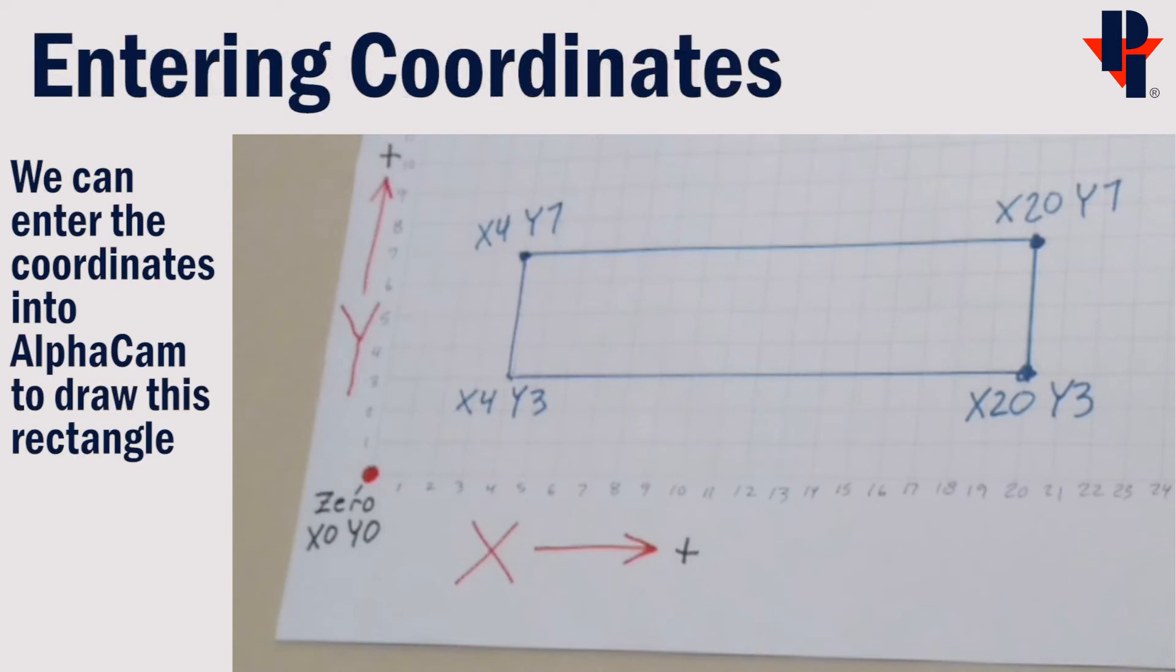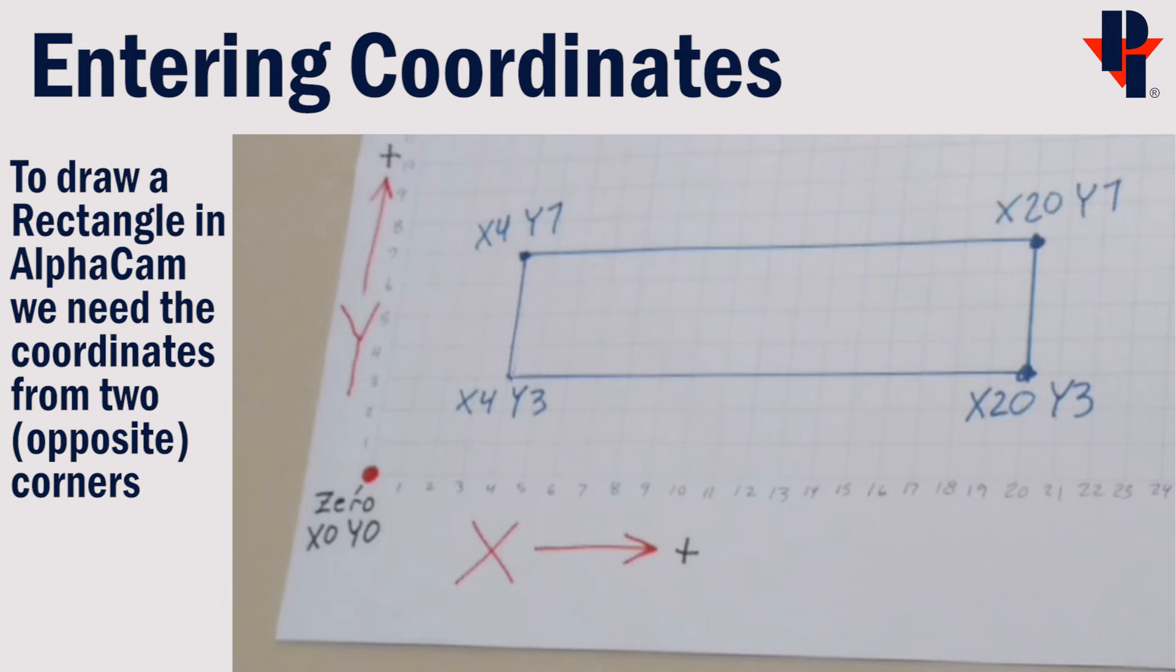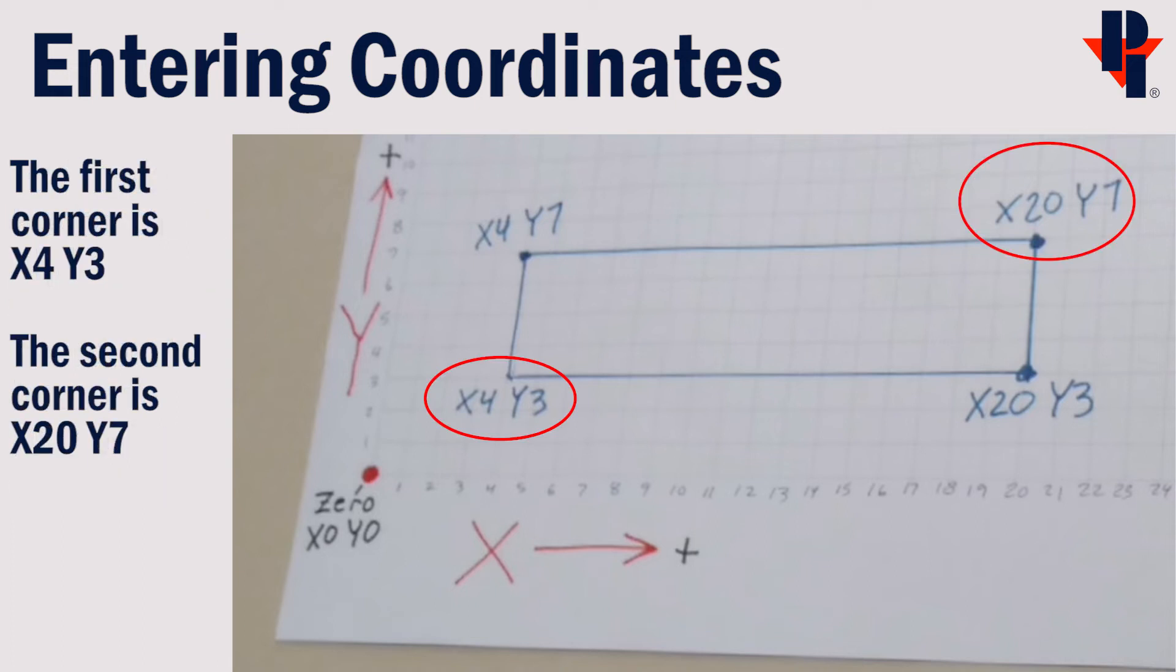To draw a rectangle in AlphaCam, we will need the coordinates of two opposite corners. For this example, I'm going to use the coordinates of the bottom left corner and the top right corner.